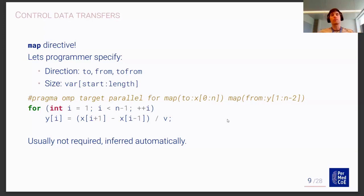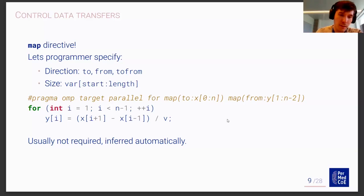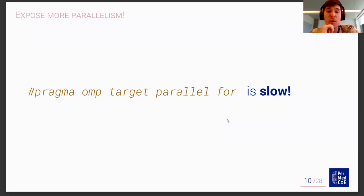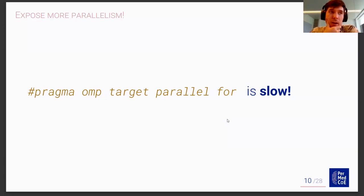Now we know how to control data transfers, which is a good achievement. However, let me break your acquired confidence by saying that the 'pragma OMP target parallel for' I've been using is actually slow. It has to do with the actual distribution of work to the GPU threads. Before I explain further, let me take a quick step back into CUDA.